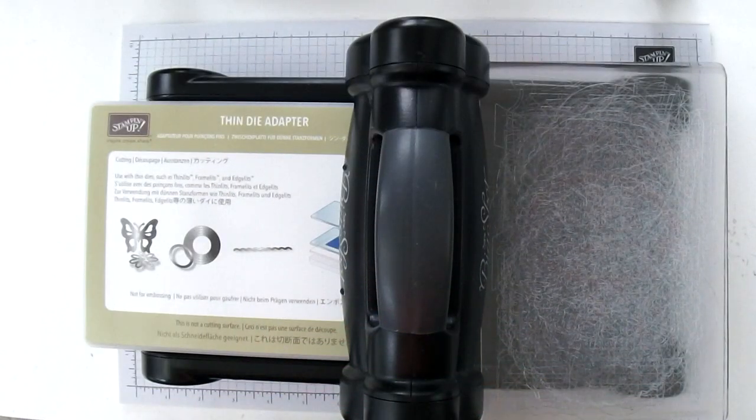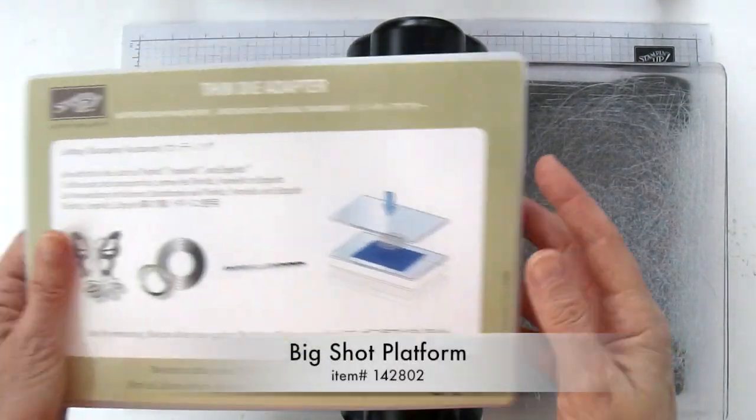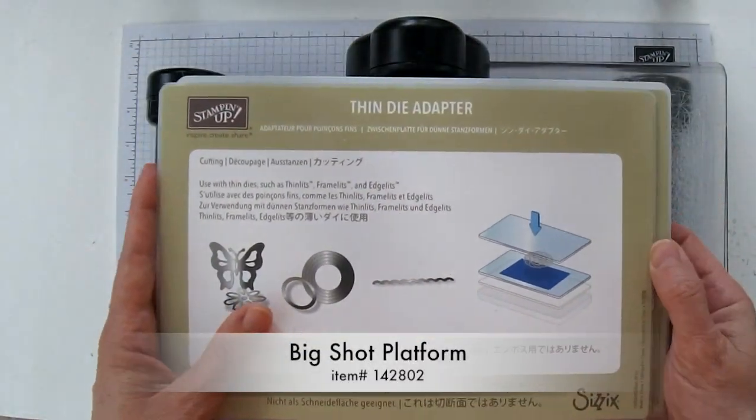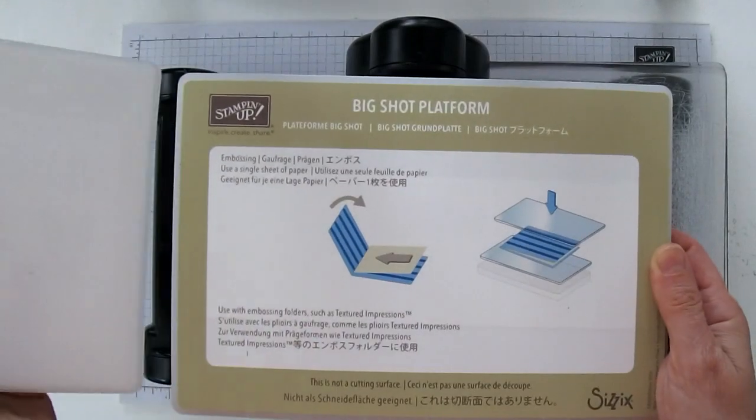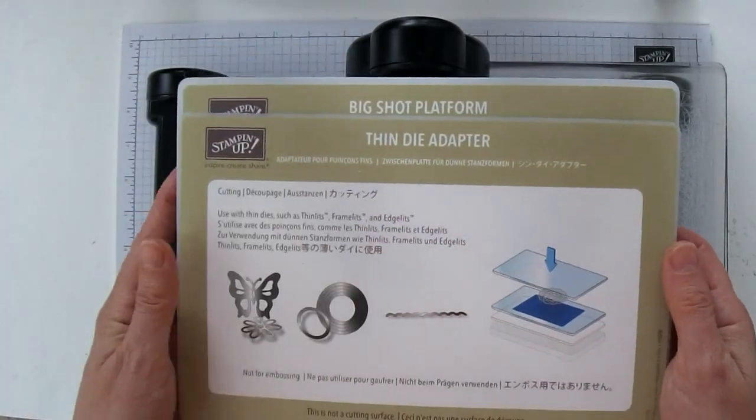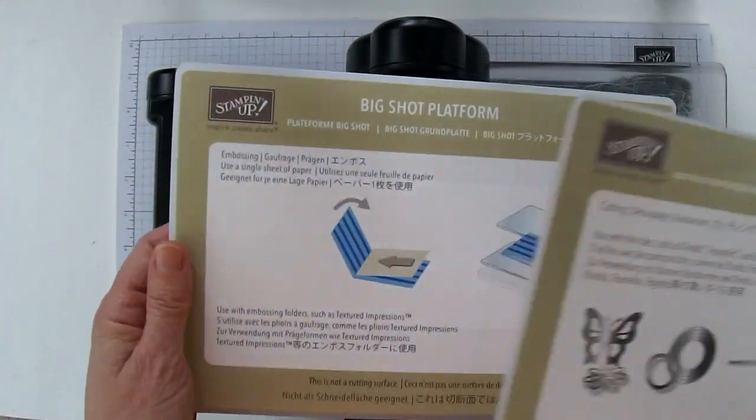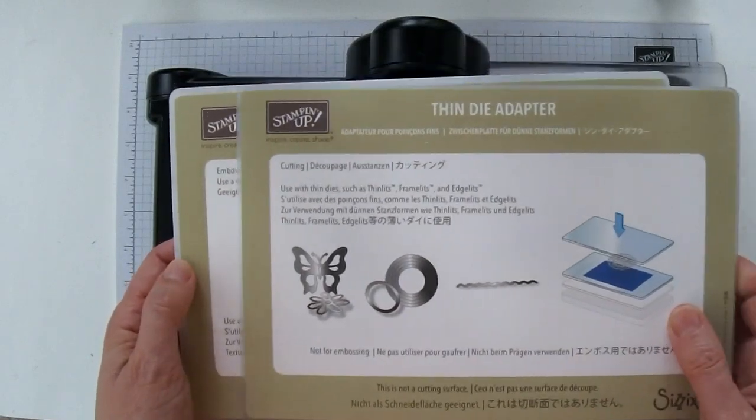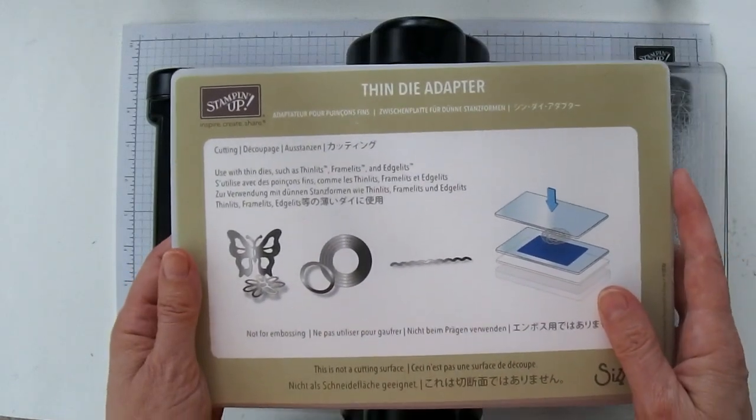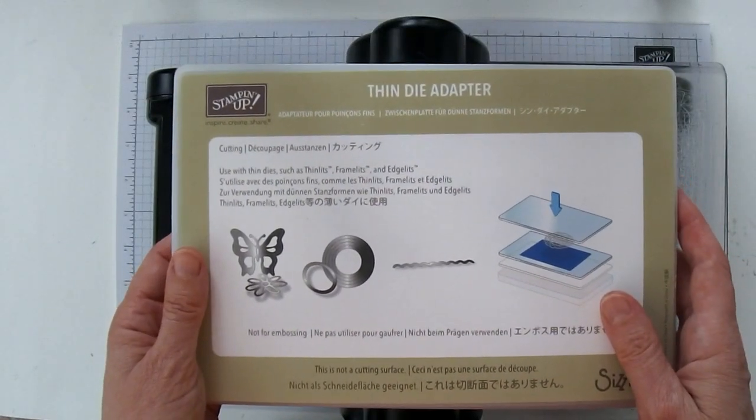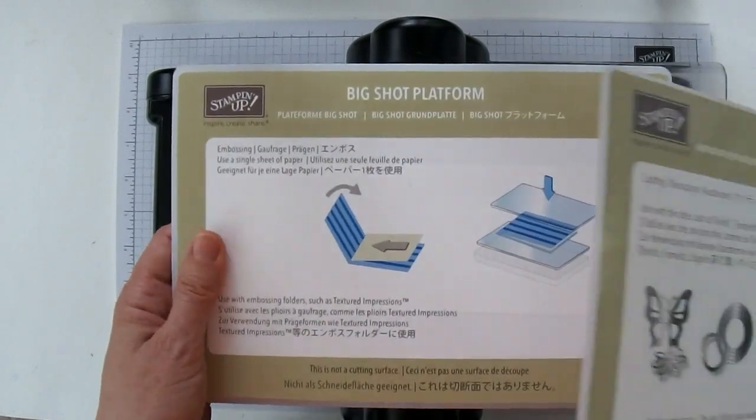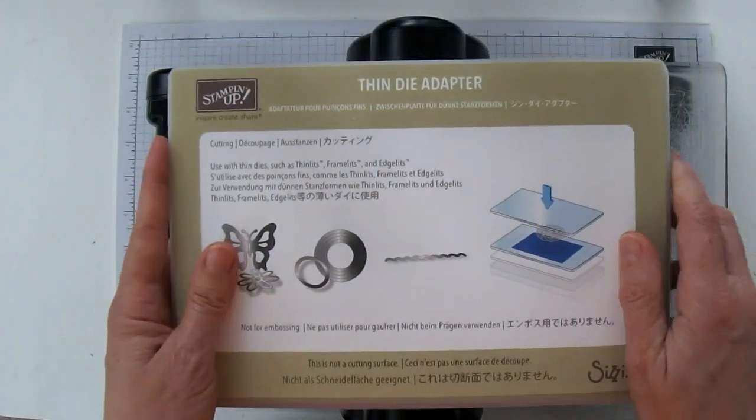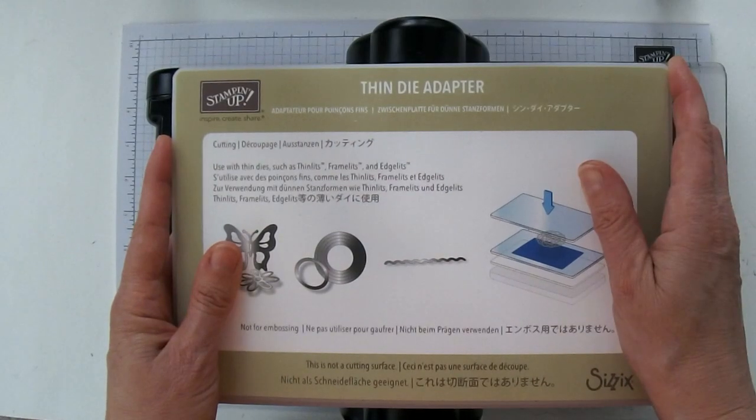To start off with, you're going to need the Big Shot and I've got the new Big Shot platform here. Our old platform used to have a hinge on the side, but now we've got a Big Shot platform that's in two pieces. I think it's easier to use. Not only that, it does a better job of cutting our detailed dies. So you're going to need both the Big Shot platform and the thin die adapter if you're using the new platform.